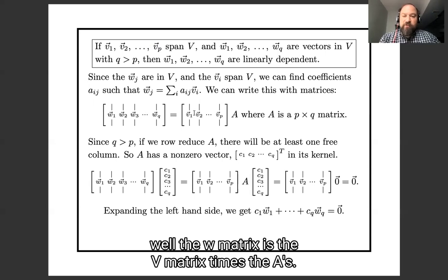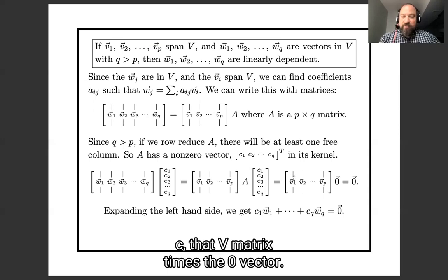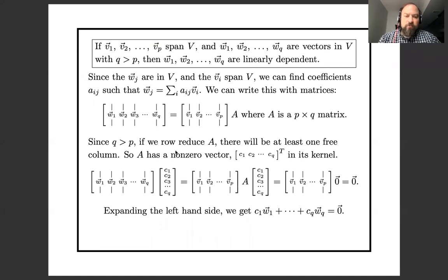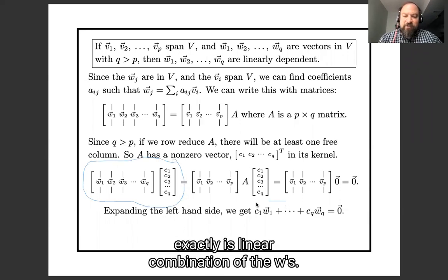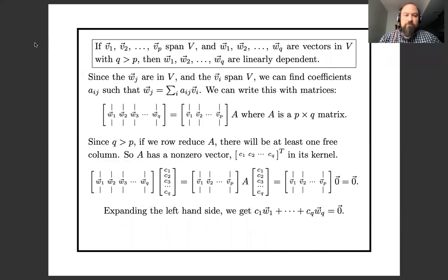Then if we multiply out the w matrix times the c's, well, the w matrix is the v matrix times the a's, v matrix times the a's times c, that's the v matrix times the zero vector, that's the zero vector. And if we multiply out this left-hand side here, this product of the w matrix by the c's exactly is a linear combination of the w's. So we've shown there's a linear combination of the w's which is zero.